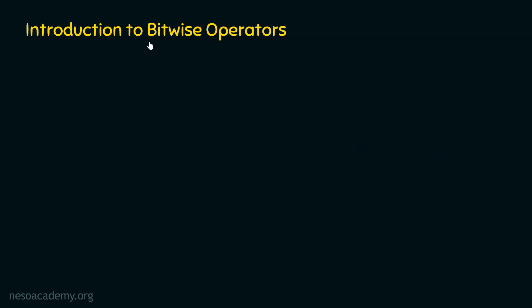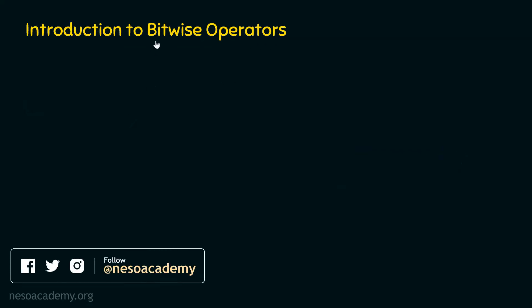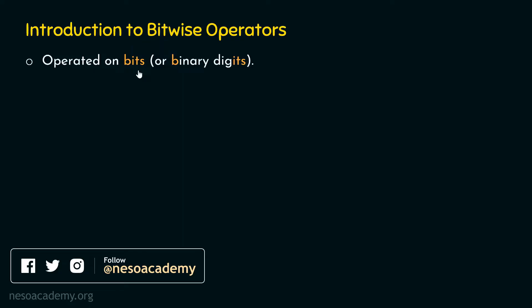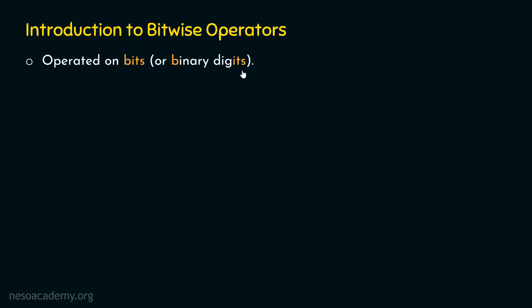Let's first understand what is a bitwise operator. A bitwise operator is an operator which always operates on bits, or in other words binary digits. Bits is short for binary digits. We cannot use bitwise operators on decimal numbers; they can only work on binary digits. Let's see the list of all the bitwise operators we have in Python.